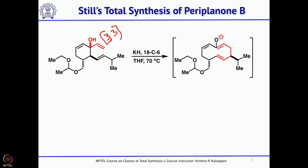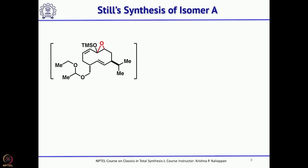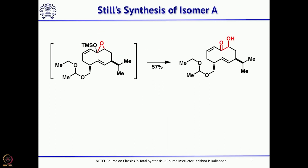This was treated with potassium hydride in the presence of 18-crown-6, triggering the anionic oxy-Cope rearrangement. Quenching with TMSCl gave the corresponding enol TMS ether. Addition of MCPBA then performed Rubatom oxidation to introduce a hydroxyl group alpha to the carbonyl — that is how the hydroxyl group was introduced next to the carbonyl.